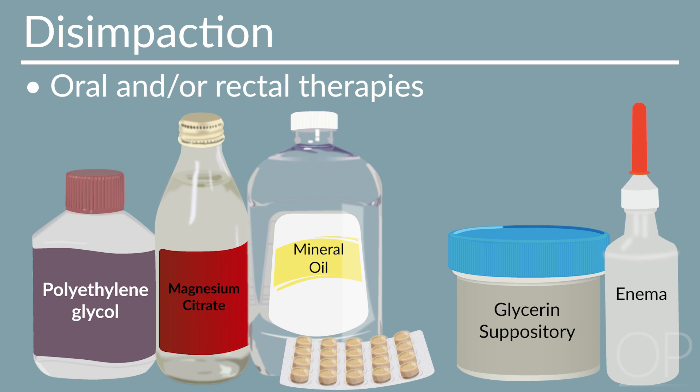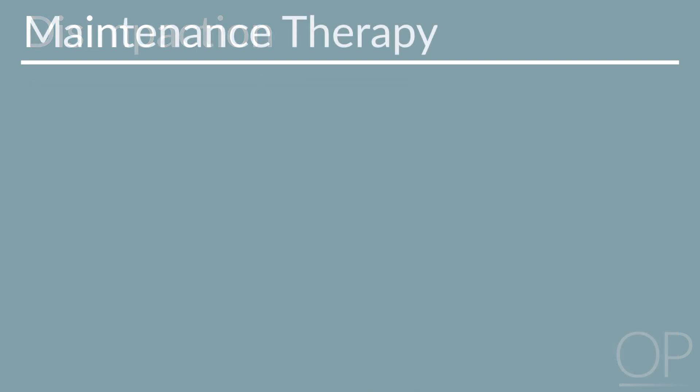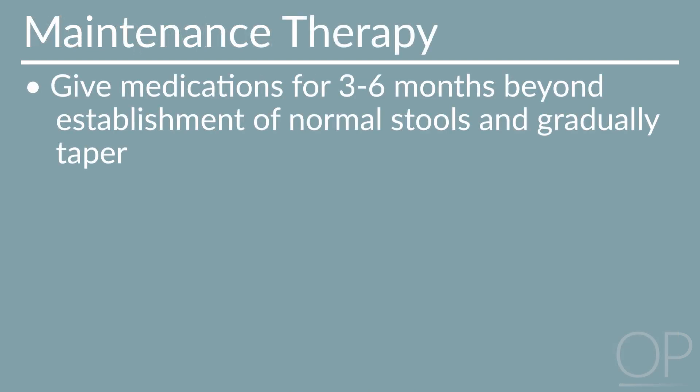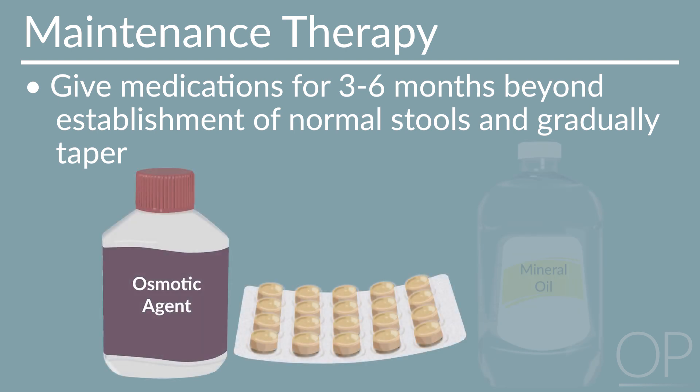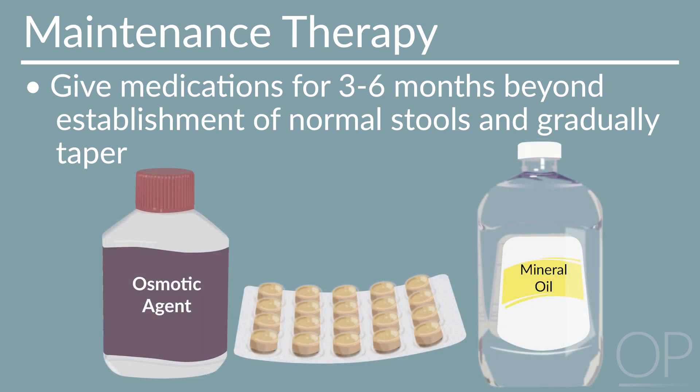Use caution when administering phosphate enemas to patients with renal impairment. Following disimpaction, a maintenance therapy should be given and gradually tapered until resolution of symptoms. A combination of any osmotic, stimulant, and lubricant agents can be used.